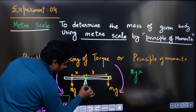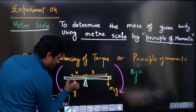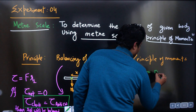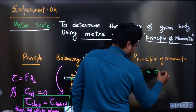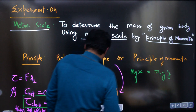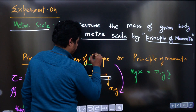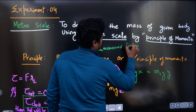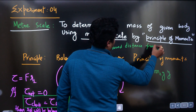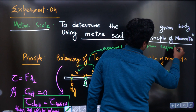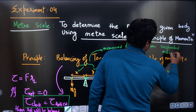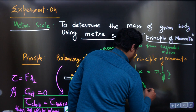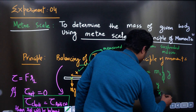X is the distance between the support — the sharp edge — and the place where you have suspended the weight. So M1G into X will be equal to M2G into Y, where X and Y are measured as the distances from the suspended masses to the support. Canceling G from both sides, M1 by M2 equals Y by X. That is the main principle.